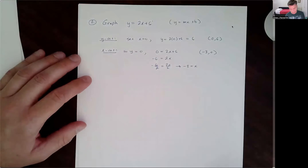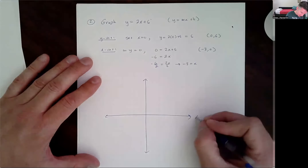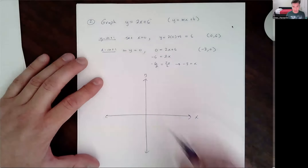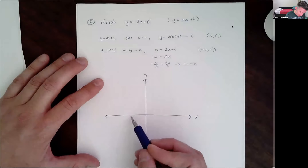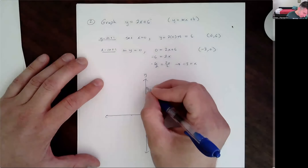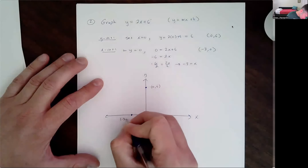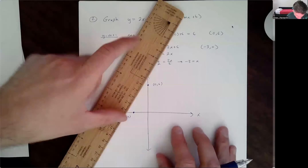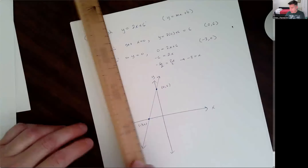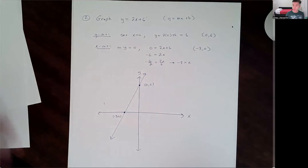If I was going to graph this without a grid, I would just draw a coordinate axis system. I'm usually labeling x and y on the sides where they're positive — the right side of the x-axis, the top side of the y-axis. I want the point (0, 6) for y and (-3, 0) for x. I'll estimate those and draw the line between them. Then I'll put arrows at the ends — the line connects them and goes through them.